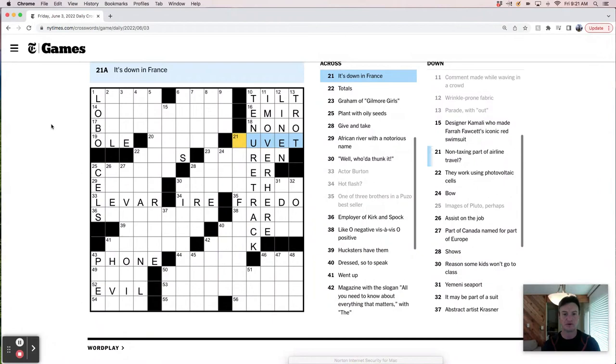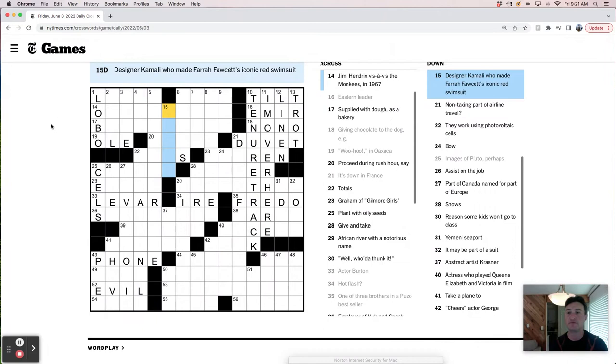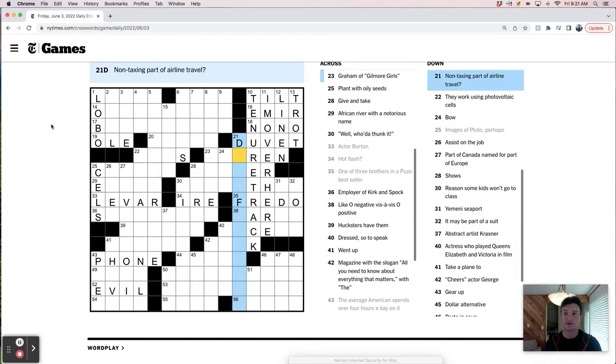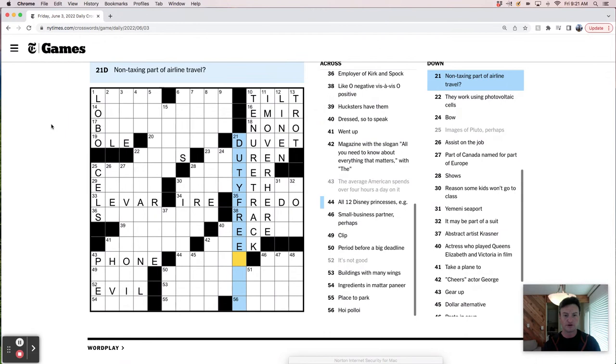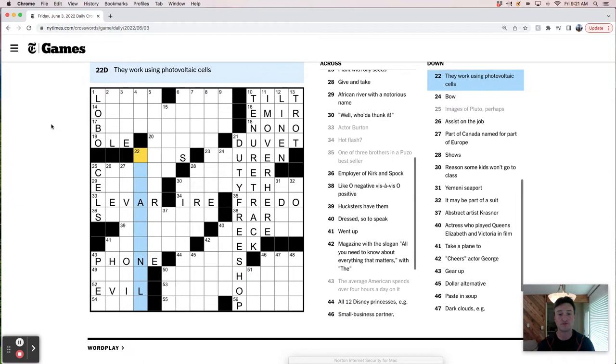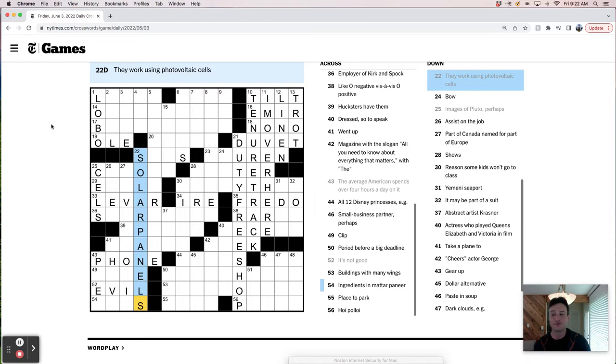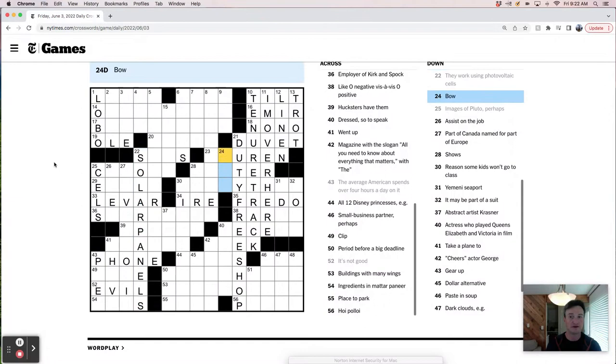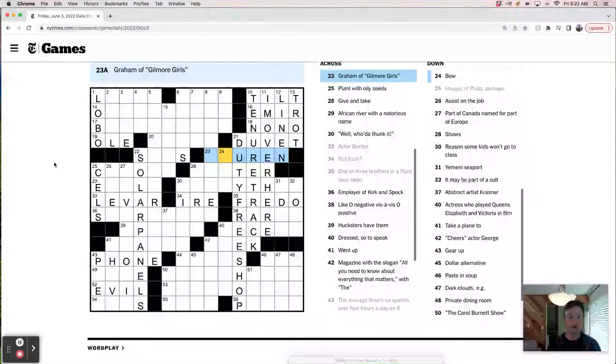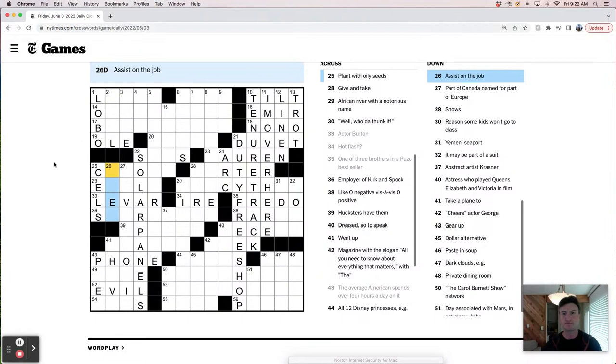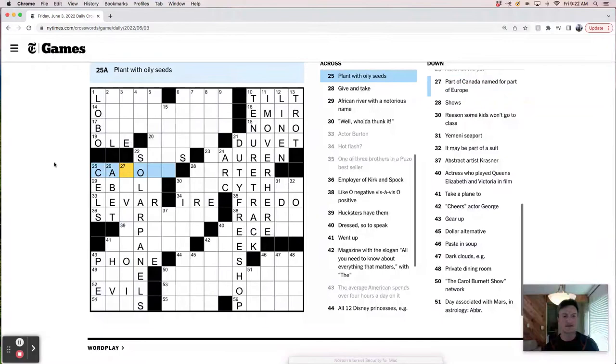Designer Kamali who made Farrah Fawcett's iconic red swimsuit. No idea. Non-taxing part of airline travel. Duty free shop. I like that one. It's good. It's a good clue. Kind of interesting fun fill. A little bit unusual. They work using photovoltaic cells. So this is solar panels. I actually took a course in photovoltaics to learn about solar energy years ago. And yeah, learned how to calculate kilowatt hours worth of solar usage and all that good stuff. Bow. Like arc maybe. Assist on the job. It's abet. Plant with oily seeds. Canola. I bet this is canola. And to be honest, I didn't even know canola was a plant, but I know canola is a type of oil. So plant with oily seeds could be turned into oil, right?